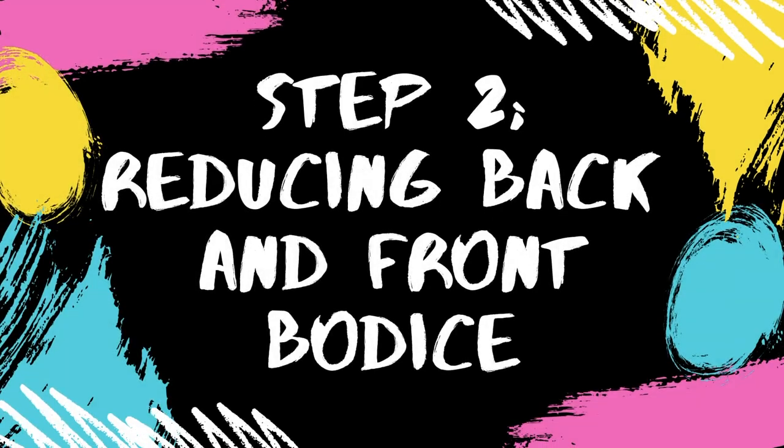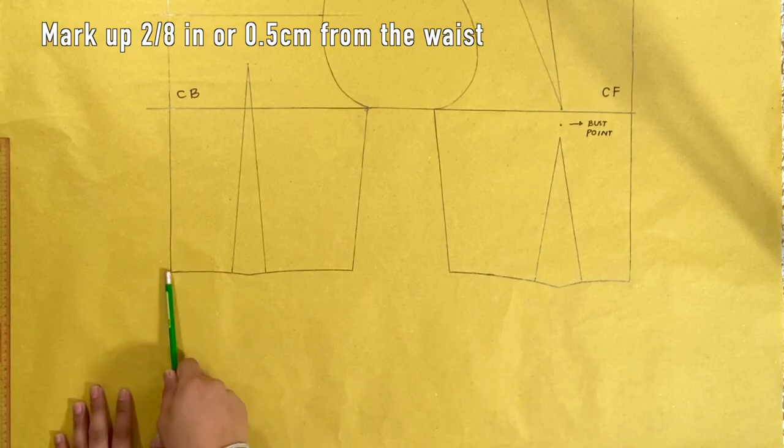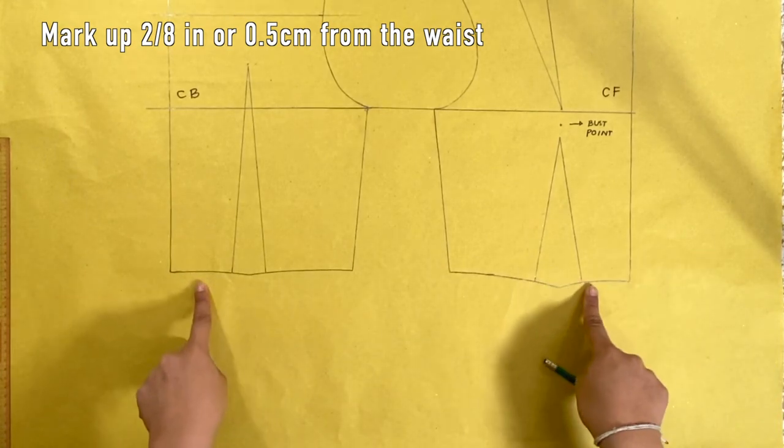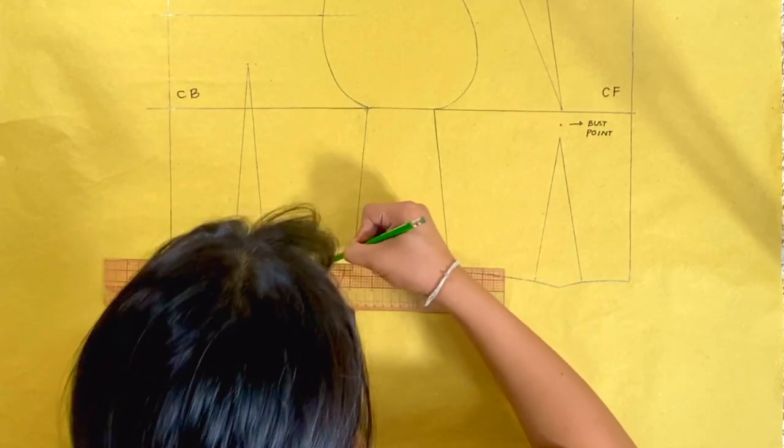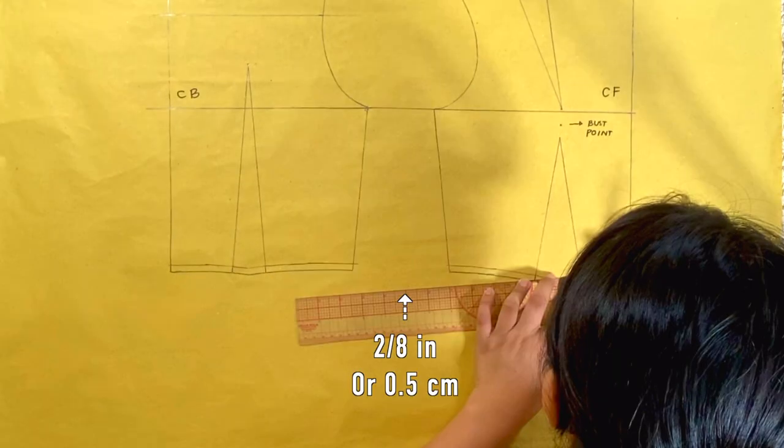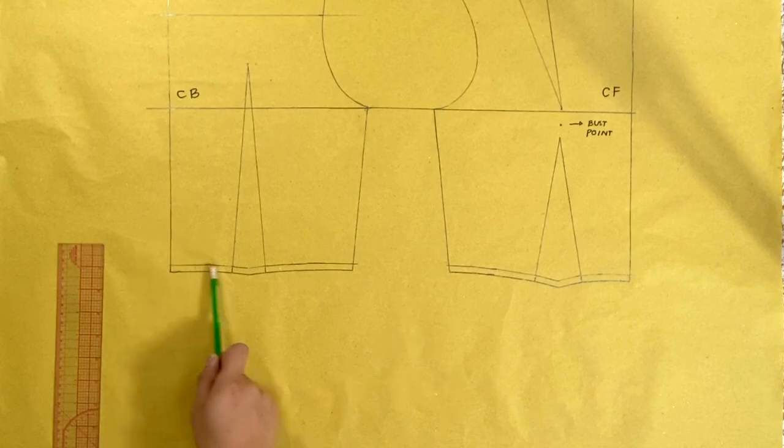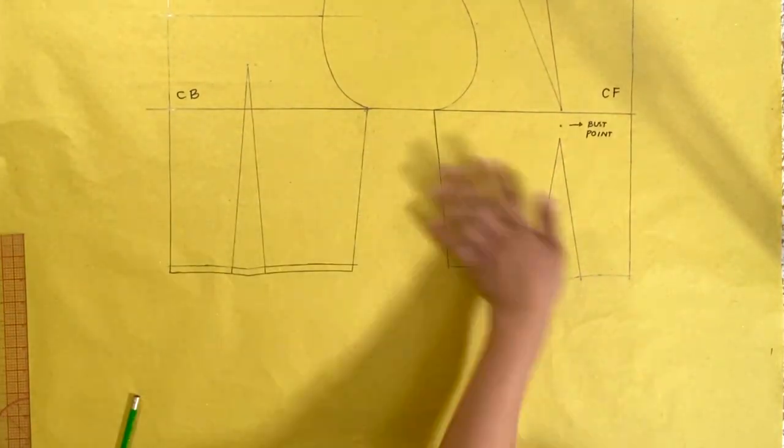Moving on to step 2. Now that we have finished tracing, we will reduce the length of the back and front bodices by 2 eighths of an inch or 0.5 centimeters. From the waistline of the bodice, mark up 2 eighths of an inch or 0.5 centimeter. And erase the old waistline.